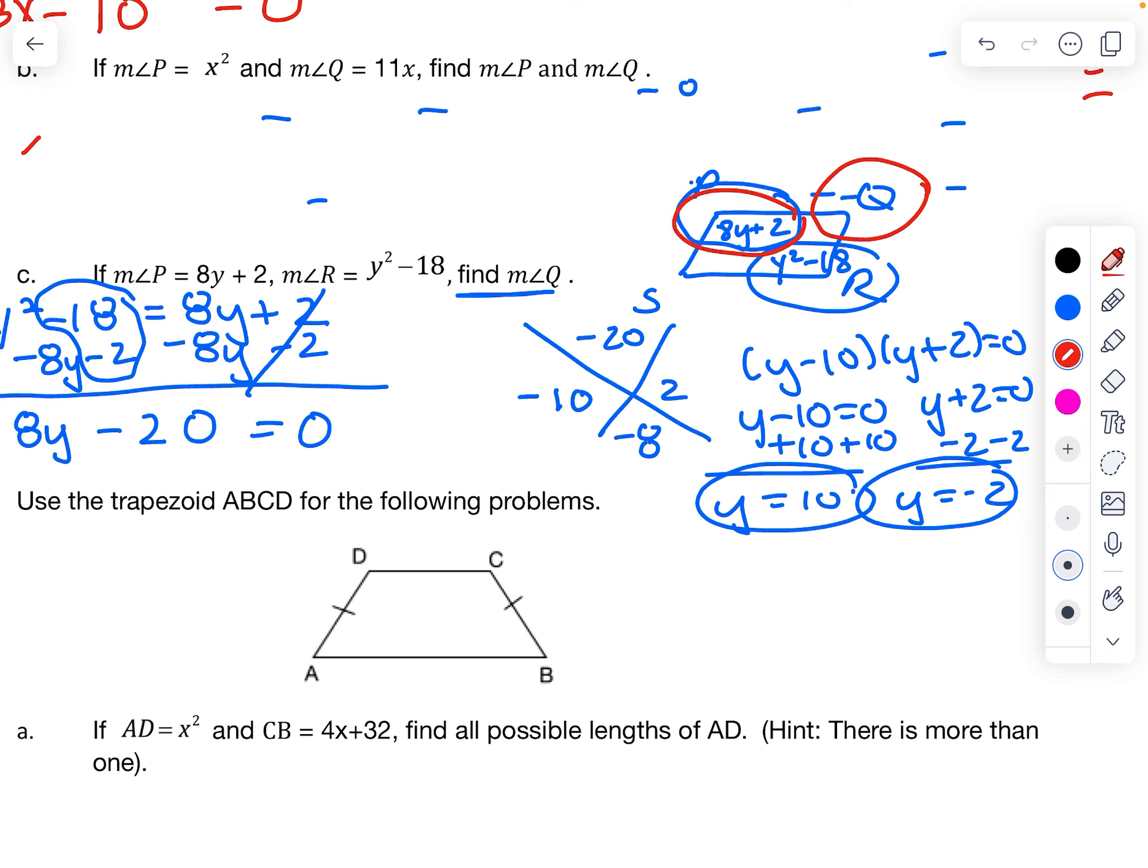I'm going to plug it into here. So if I plug in 10 in for y here, I can find the measure of angle P, which is going to be 8 times 10 plus 2, which is 82 degrees. Notice if I plug in negative 2, it's going to make it a negative number. So that number doesn't make sense.